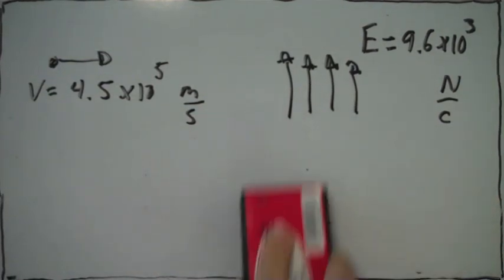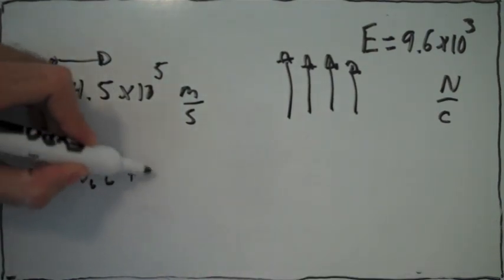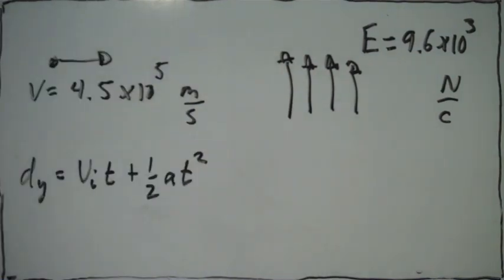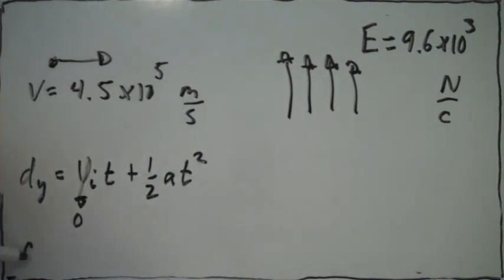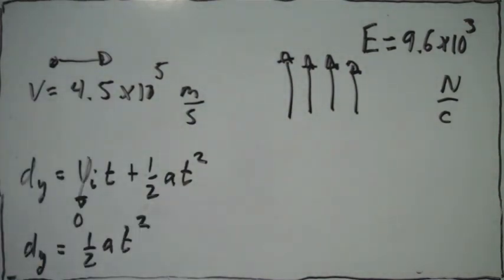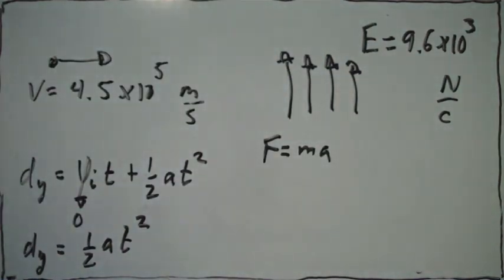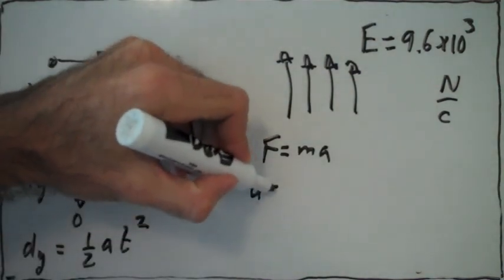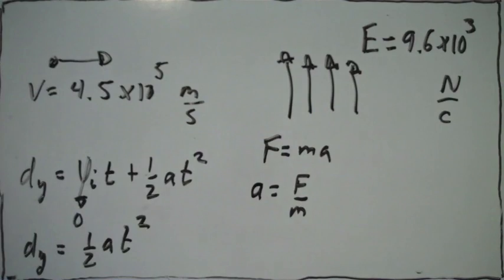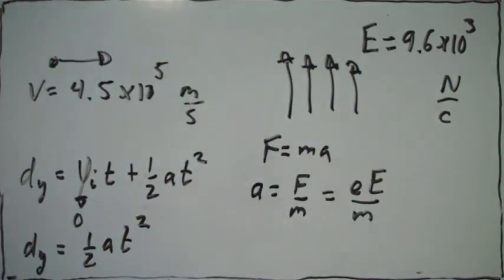Now if they ask us what is the vertical displacement of the proton in that much time, the y displacement is given by this formula. We know that the initial velocity in the y direction is 0, so the y displacement is just given by ½at². Now what is the acceleration of the proton in y? Well, F = ma, so the acceleration is just F over m, and the force the proton feels is equal to the charge of the proton times the electric field.